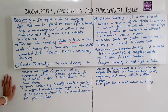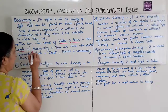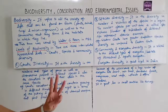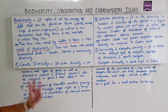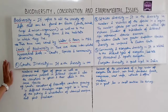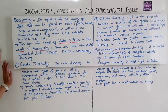There are levels of biodiversity. There are three interrelated hierarchical levels: genetic diversity, species diversity, and community diversity.